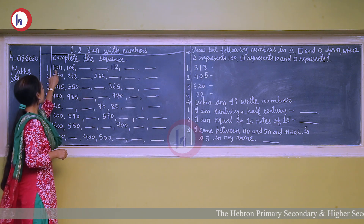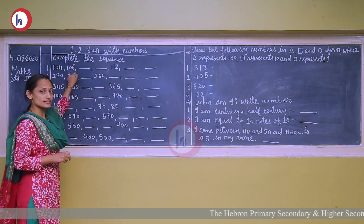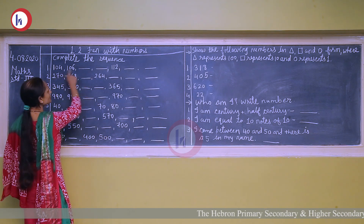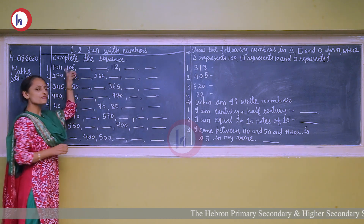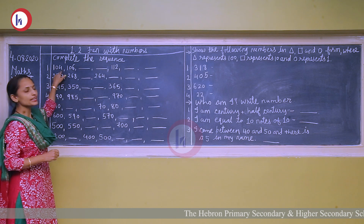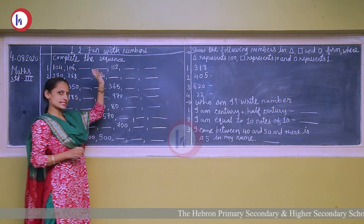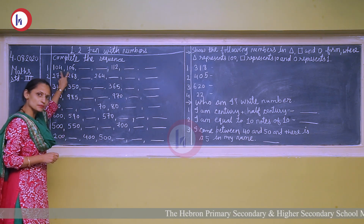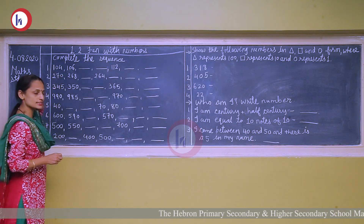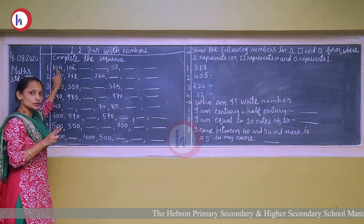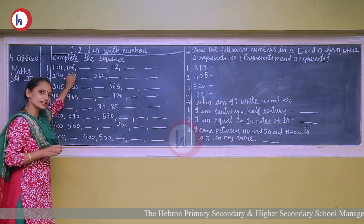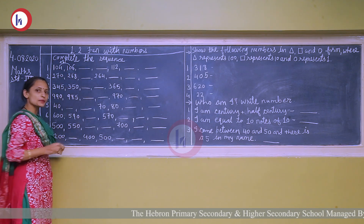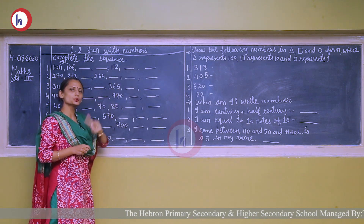Now our first question: 104 and 106. First, what we have to decide is whether it is a forward counting or a backward counting. Here, numbers are increasing, so it is a forward counting. Now we will find out by how many numbers it is increasing. We find the difference between 104 and 106 — if we add two to 104, we get 106. So here we will add two repeatedly, every time.